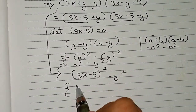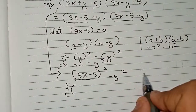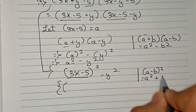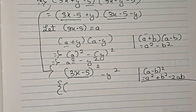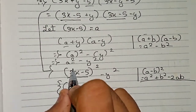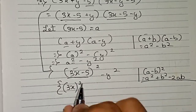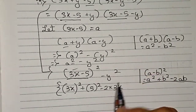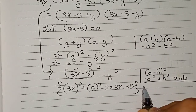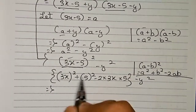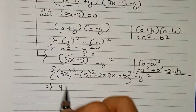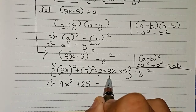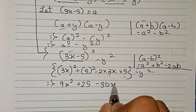Now we expand (3x minus 5) whole squared using the identity (a minus b) squared equals a squared plus b squared minus 2ab. So: 3x squared is 9x squared, plus 5 squared is 25, minus 2 into 3x into 5 which equals 30x. So the full expansion is 9x squared plus 25 minus 30x minus y squared.